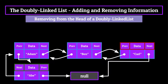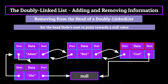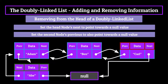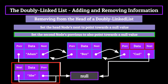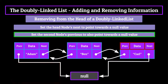For removing, it's even simpler. We set the head node's next to point towards a null value. Then by setting the second node's previous to also point towards a null value, we can remove the head node from the list. In our example, we'd first set the abe node's next to null, then set the atom node's previous to also be null. Because the abe node doesn't have anything to point towards nor anything pointing towards it, it will be deleted from the list, and the atom node will regain its position at the head.